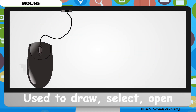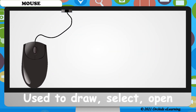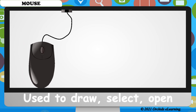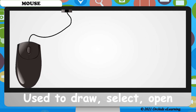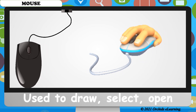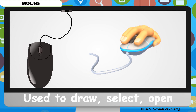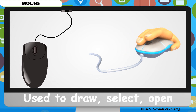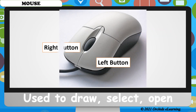The mouse of a computer is a pointing device. It helps to point at different things on a computer. It has two buttons and a wheel in the center, which is called the scroll wheel.